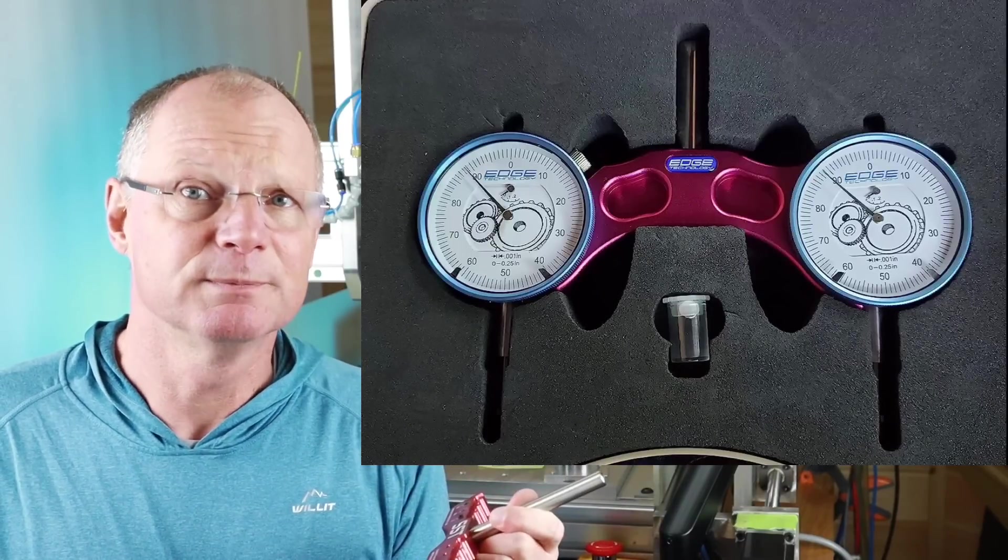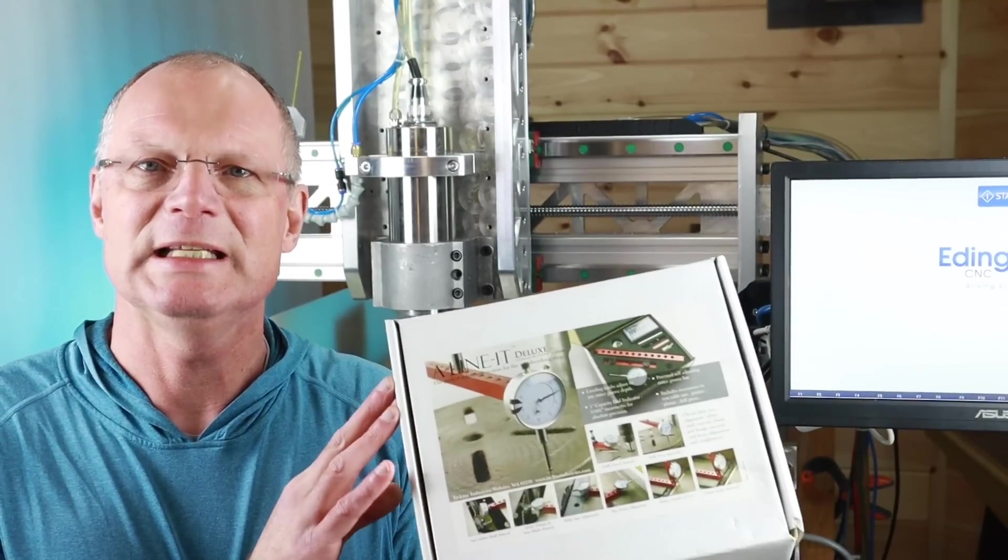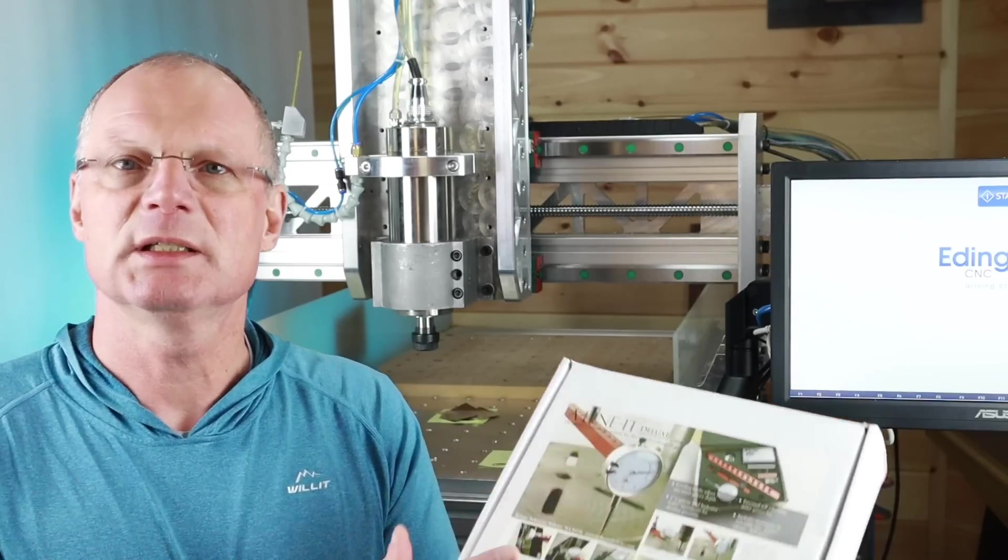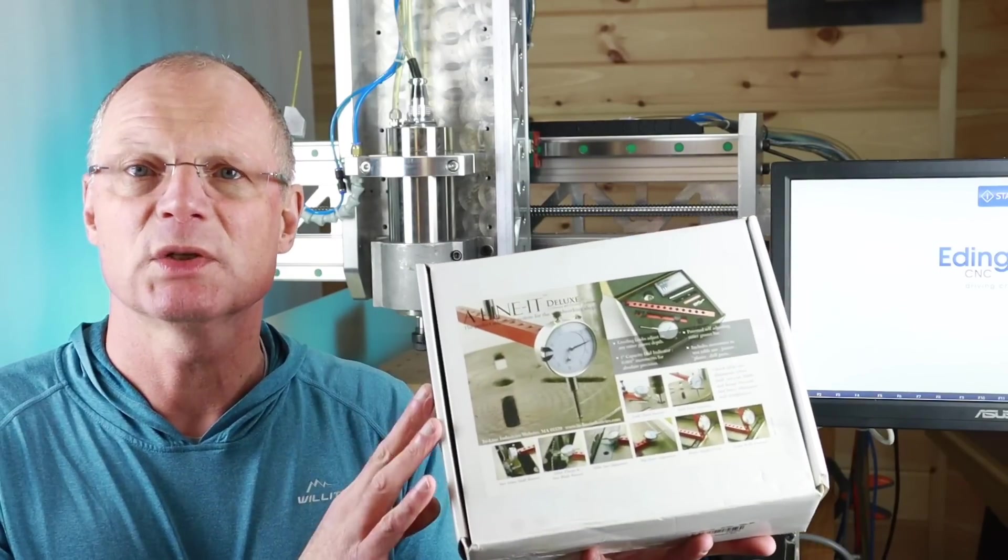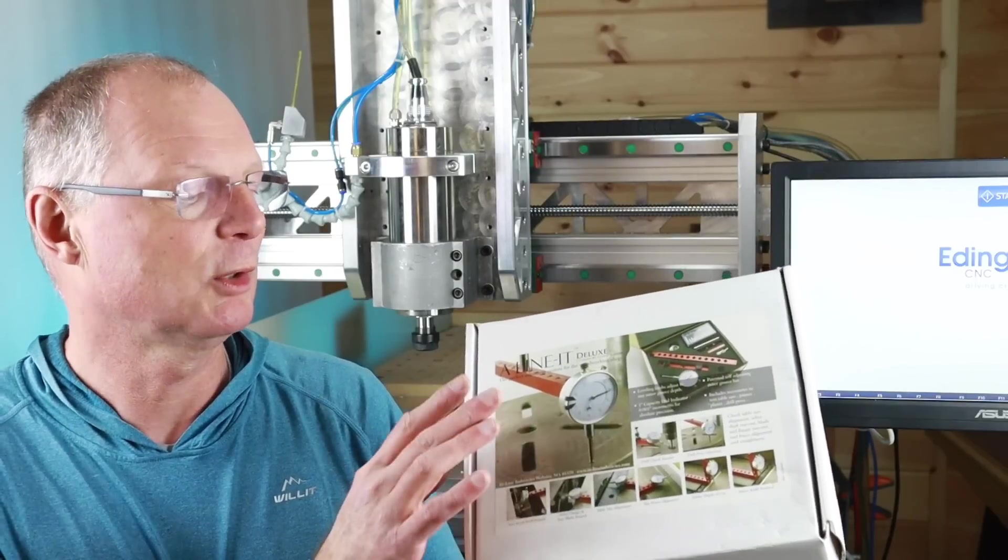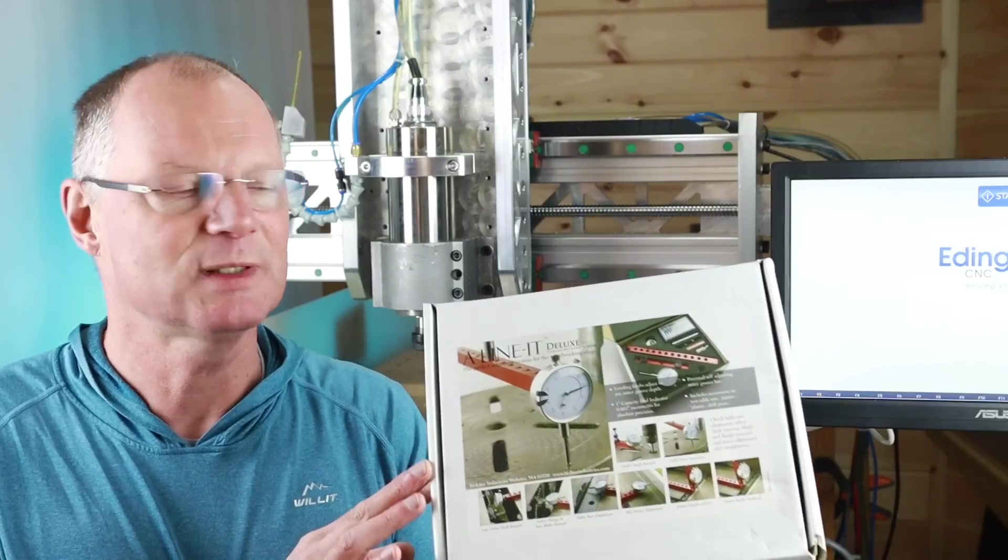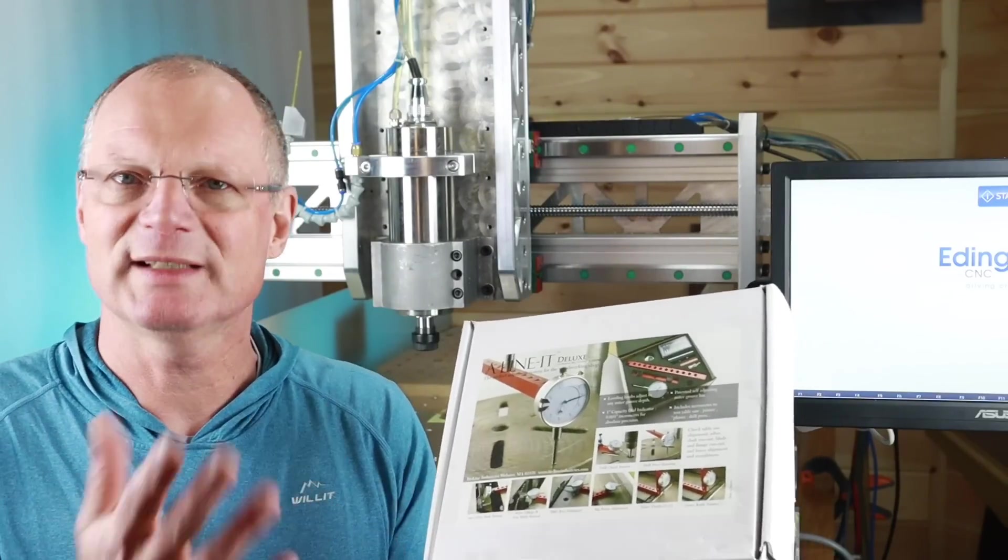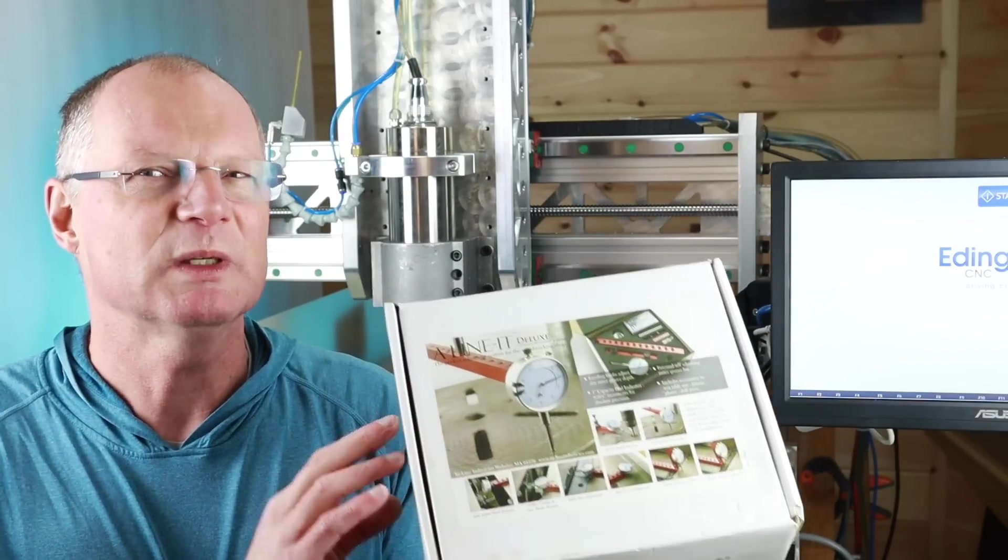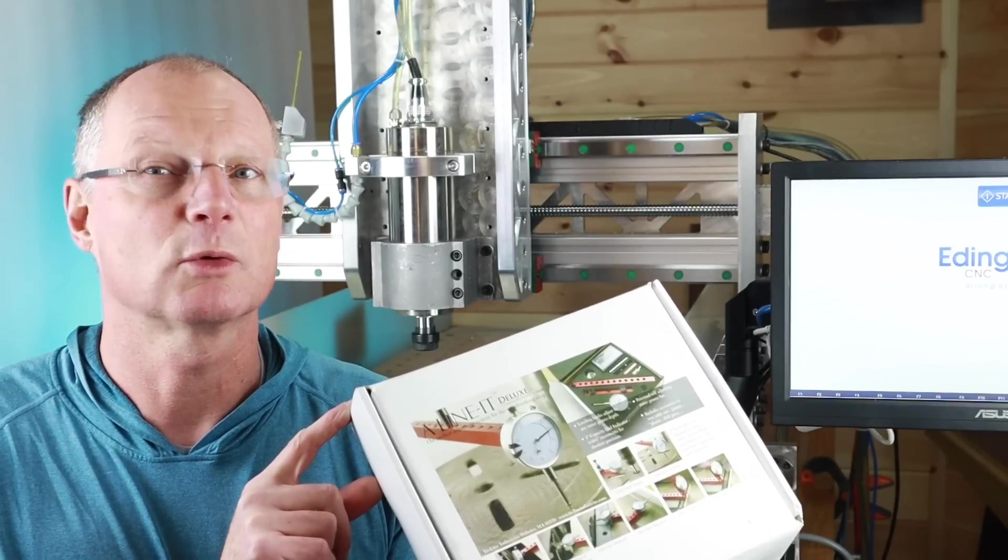If you're a woodworker then I'd like to suggest this Align-It kit, that's how it is spelled, Align-It Deluxe Kit. You can use it on your table saw and you can use it on tramming for the router or also on tramming the table of your drill press for example. Of course the SST will work on that scenario as well. Anyways have a look at this one as well, it's a little bit more expensive. I got this one here I'm fairly sure at Woodcraft or Rockler.